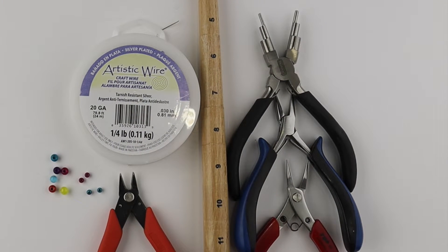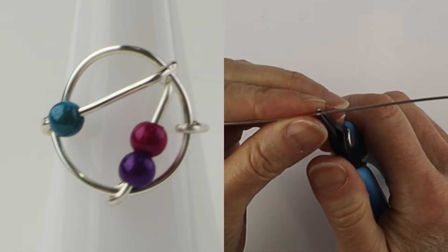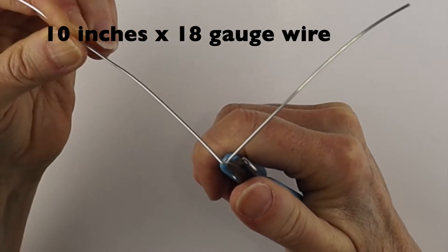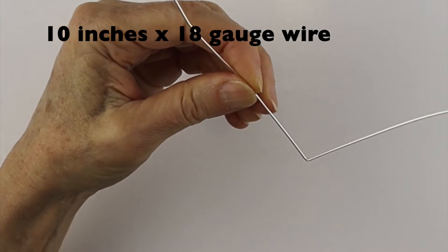What you're going to need for the project are your tools, a ring mandrel, some wire, a variety of beads and for the first one I'm going to use 18 gauge wire cut about 10 inches.